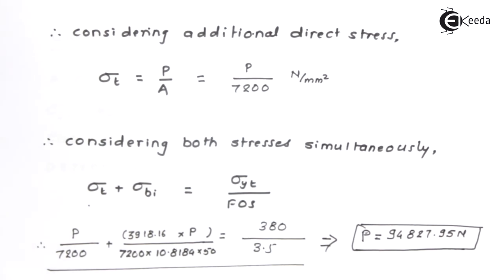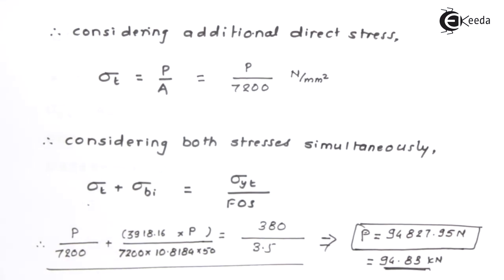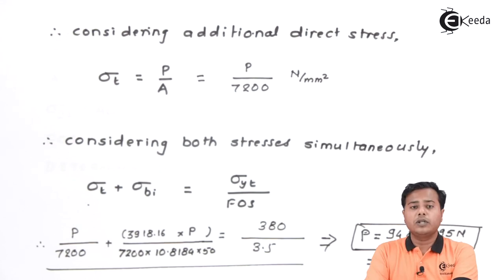So that is how the value is obtained. So this is what the load carrying capacity of the given crane hook with the given cross-section and the given material properties. It comes out to be 94.83 kN which is the load carrying capacity of the given crane hook. In the next session, we are going to solve a similar problem where the cross-section will be different, but the approach will be same for the crane hook kind of thing. Thank you so much for watching this video.